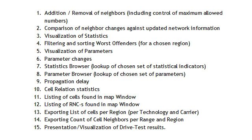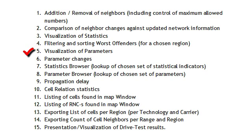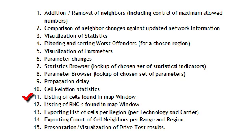Wcells also includes a set of advanced features giving you more control and even greater fine-tuning of the network. The advanced features include the addition and removal of neighbors, comparison of neighbor changes against updated network information, visualization of statistics, filtering and sorting of the worst offenders, visualization of parameters, parameter changes, statistics browser, parameter browser, propagation delay, cell relation statistics, listing of cells found in a map window, listing of RNCs found in the map window, exporting the list of cells per region, exporting the count of cell neighbors per range and region, and visualization of drive test results.